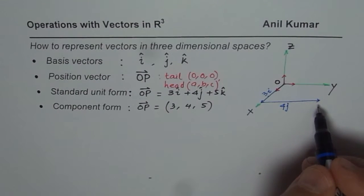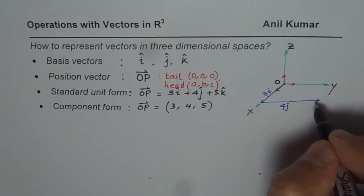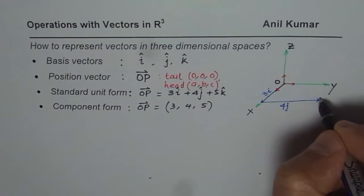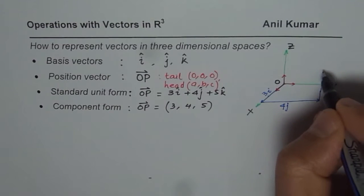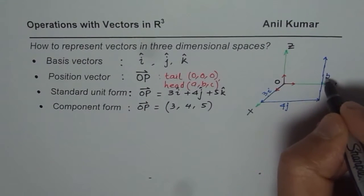Now when I say 5k, it means I have to go up five units in Z directions. So we could go up: 1, 2, 3, 4, and 5. So this is 5k.